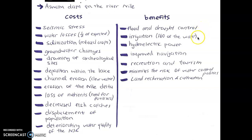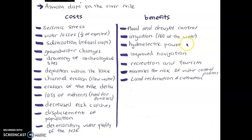Next is irrigation. So 60% of water from the Aswan Dam is used for irrigation. Irrigation is basically the redirection of water to agricultural land for watering the crops. So it's important for the population also. Then hydroelectric power — this provides a lot of energy, especially renewable, ecological energy.